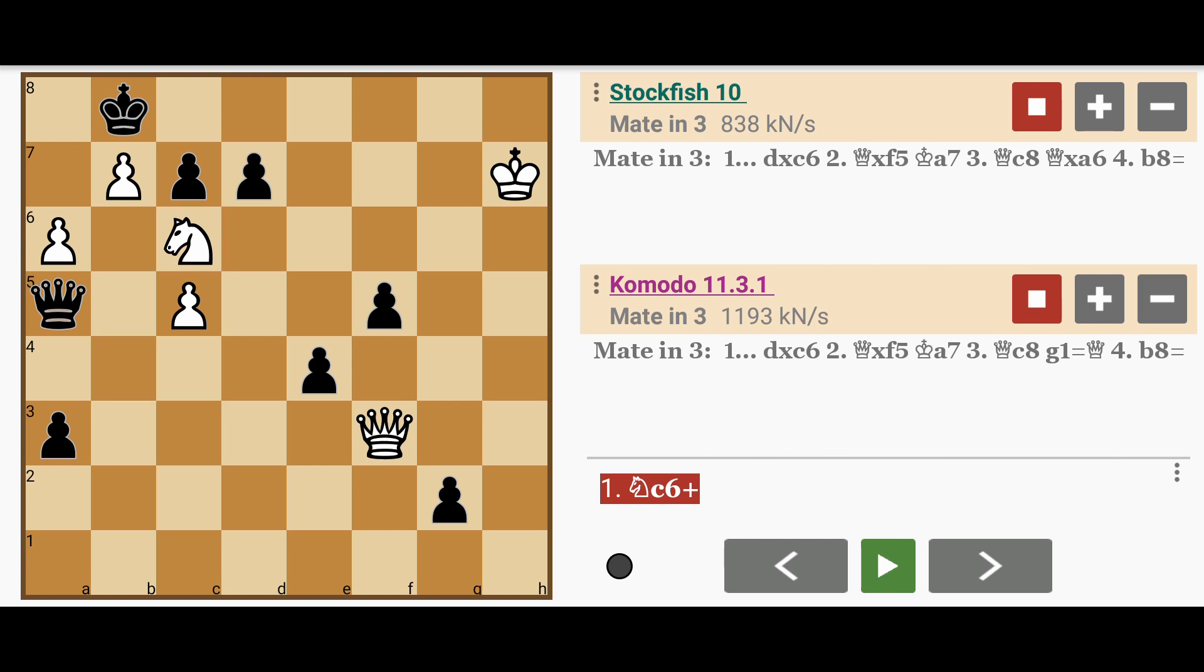Black has no choice but to capture the knight. Otherwise it's not only a fork but actually checkmate. The knight controls a7, and the black king cannot move to a8 or c8 because of the pawn on b7. So pawn captures knight.